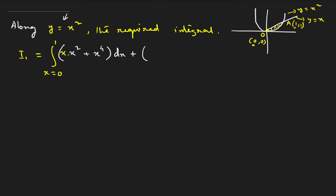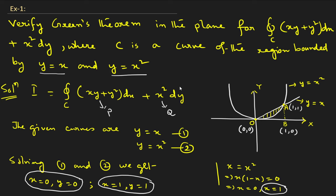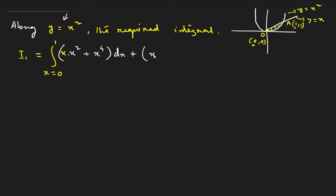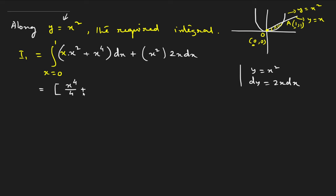The first term is x³, which integrates to x⁴/4. The second term is x⁴, integrating to x⁵/5. The third term is 2x³, integrating to 2·x⁴/4. Evaluating between limits 0 to 1 and calculating, we get I1 = 19/20.